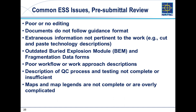QC and QA sections in the ESS should be abbreviated but have the critical elements with a good description of how you'll conduct QC and QA. Make sure your maps are easy to interpret and complete — 8020-15 tells you what your maps need to contain. Make sure they're easy to read, not only for the reviewer's sake but also because the ESS is a field document used by personnel implementing it in the field.